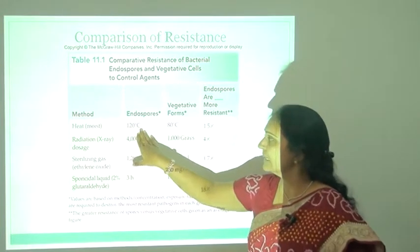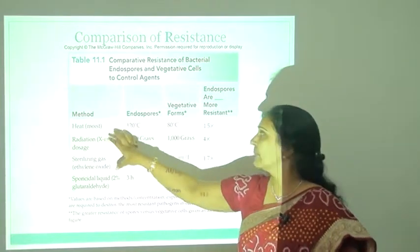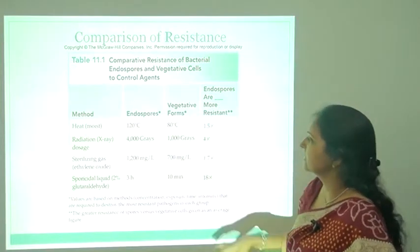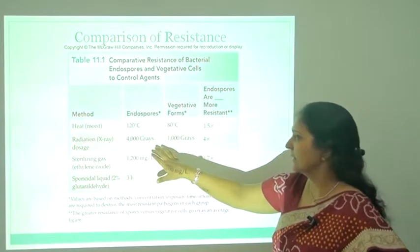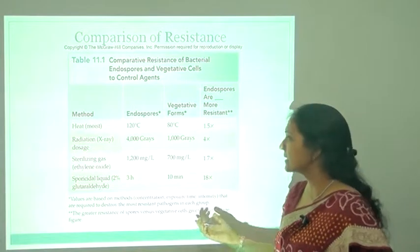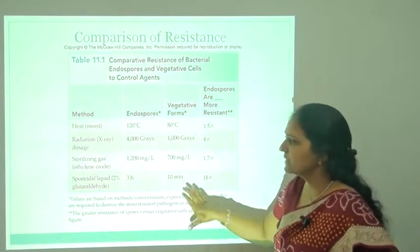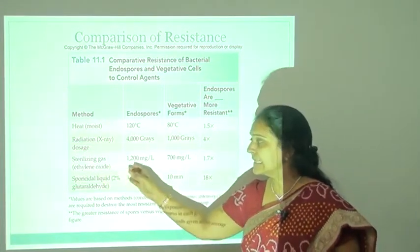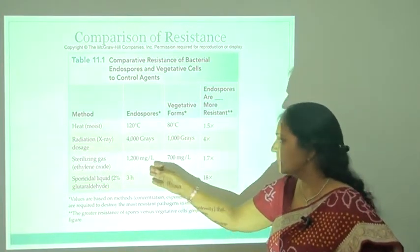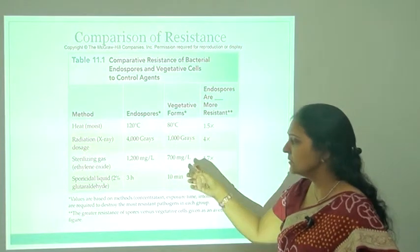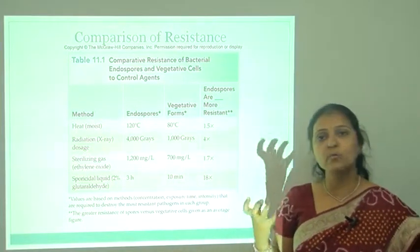Endospores can be killed at 120°C by the heating method; vegetative forms require only 80°C. For radiation, spores require 4000 gamma rays and vegetative forms require only 1000 gamma rays — so spores require 4 times higher radiation. If we use a sterilizing gas such as ethylene oxide, spores require 1200 mg/L concentration while vegetative cells require only 700 mg/L. From this comparison, we can say that spores are most resistant.